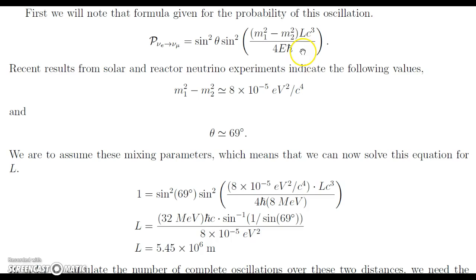So we have mass 1 squared minus mass 2 squared, times length, times C cubed, which is the speed of light cubed, all over 4 times the energy times h bar. And here the length, which we'll be looking at more in this problem, is the distance between the source and the detector.